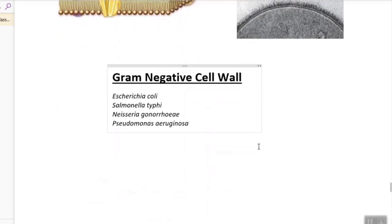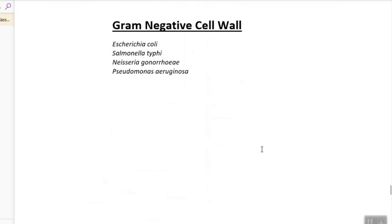Now let's talk about the gram-negative cell wall. Some examples of gram-negative bacteria: E. coli, Salmonella typhi, you guys have heard of salmonella I'm sure from eating raw chicken, Neisseria gonorrhea which causes a sexually transmitted disease, and Pseudomonas aeruginosa, a common hospital-acquired infection that usually only affects immunocompromised individuals.